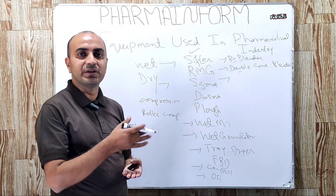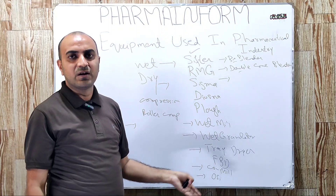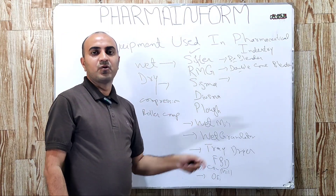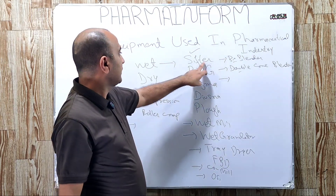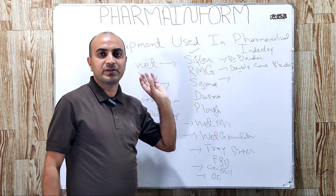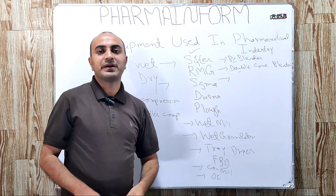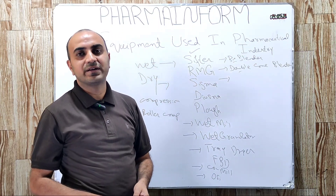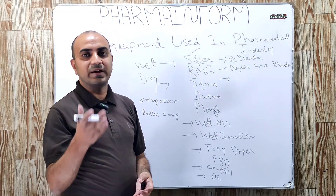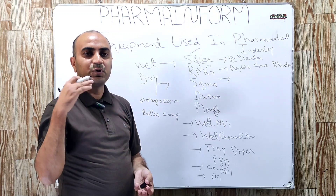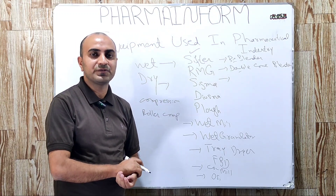For direct compression, there are three steps: weighing, sieving, and mixing. For weighing, we use weighing balances for all types of granulation. For direct compression, we use a shifter for sieving and any type of blender for final blending. In direct compression, we only weigh our ingredients, sieve them, and blend the powders to get a uniform mix.